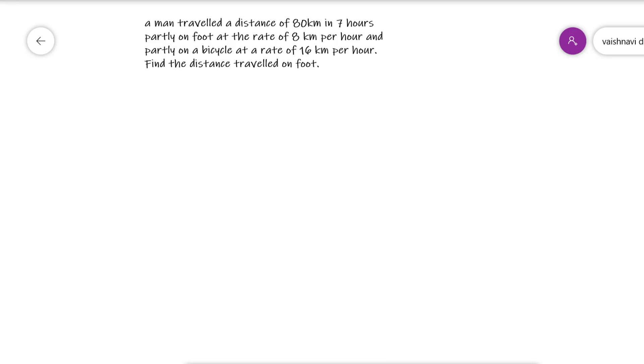A man traveled a distance of 80 kilometers in 7 hours, partly on foot at a rate of 8 km per hour. So from A to B it is 80 kilometers and he travels in a time of 7 hours.